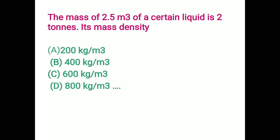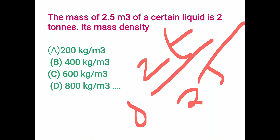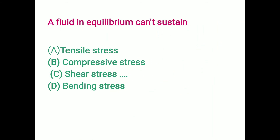The mass of 2.5 m³ of a certain liquid is 2 tons. Using the formula density = mass per unit volume: 2 tons divided by 2.5 m³ gives 800 kg/m³. Option D is the correct answer.